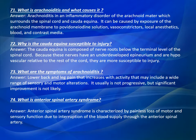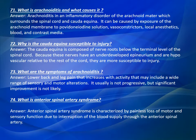Question 72: Why is the cauda equina susceptible to injury? The cauda equina is composed of nerve roots below the terminal level of the spinal cord. Because these nerves have an underdeveloped perineurium and are hypovascular relative to the rest of the cord, they are more susceptible to injury.